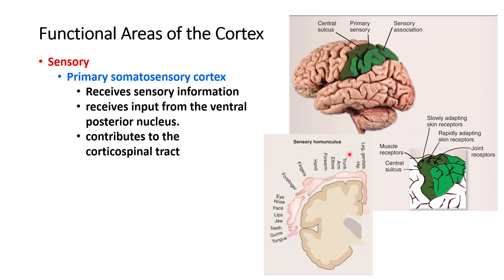You also have a sensory homunculus — the same concept as the motor homunculus — where different parts of the cortex are responsible for different parts of the body. The face, hands, pharyngeal area, and tongue have larger representations because there are many sensory receptors there. The tongue is involved in taste, the fingers need to discriminate many types of stimuli, and the face is very sensitive. In contrast, the back, abdomen, and legs are less sensitive. Genitalia sensation is also represented near the cingulate gyrus.